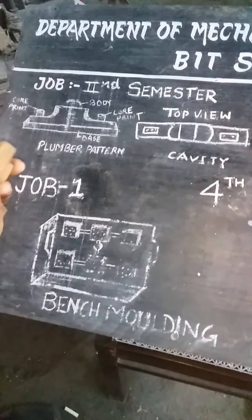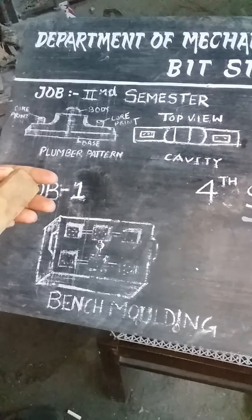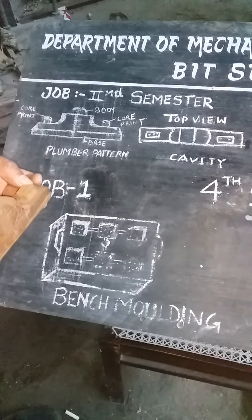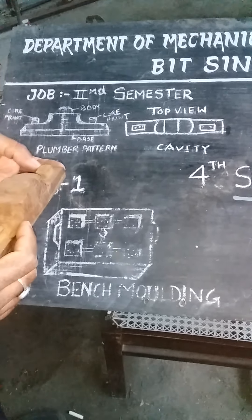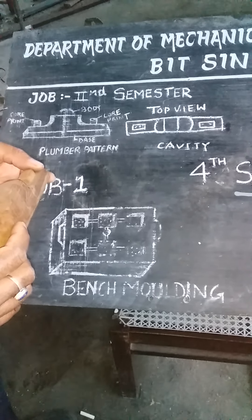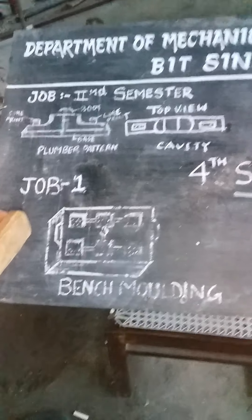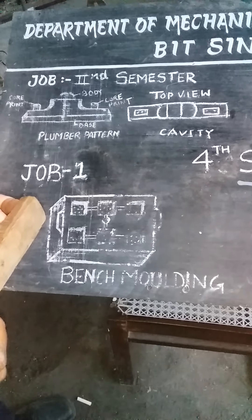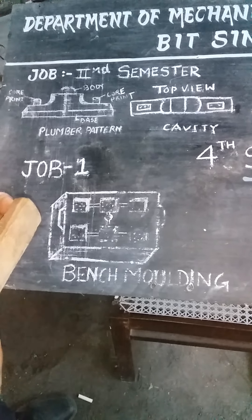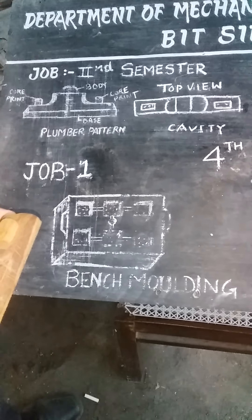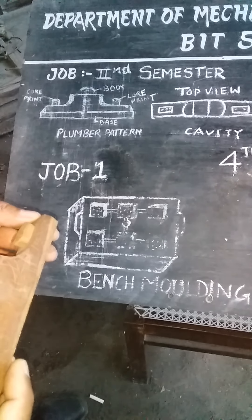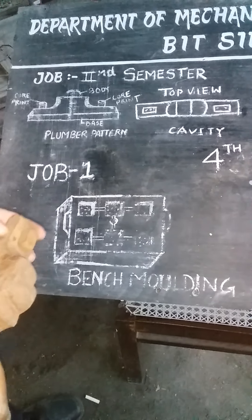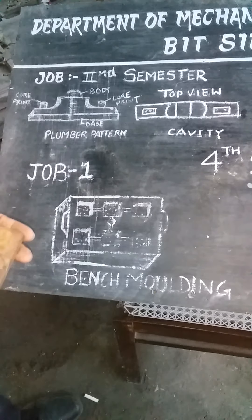It is very important that whatever pattern we are making in the carpentry shop, we give different types of allowances. Allowance accounts for what happens when we pour the molten material into the mould — there are different types of shrinkage taking place, like volumetric shrinkage and solidification shrinkage. In order to cope with that shrinkage, we give different types of allowance on the pattern. For second semester we are making the plumber pattern, which is job one.